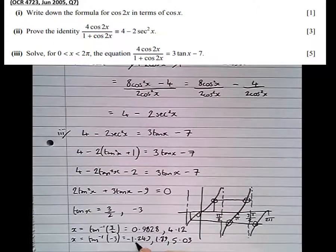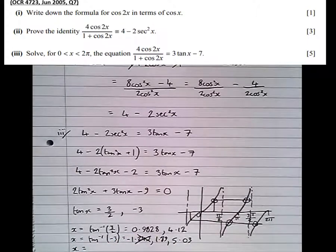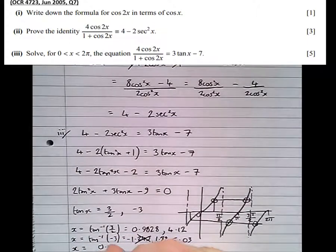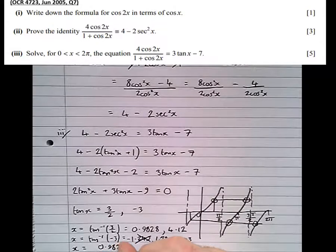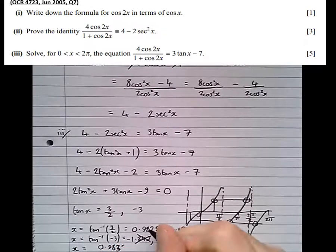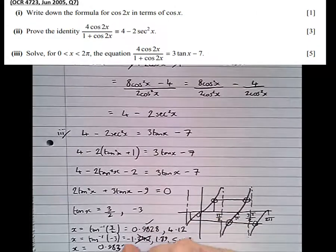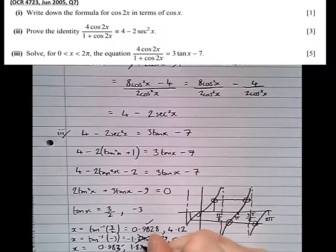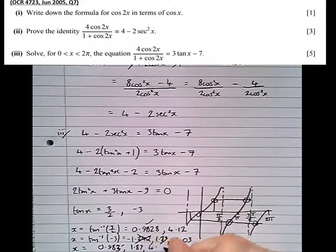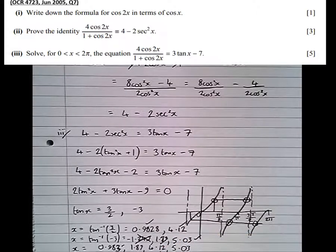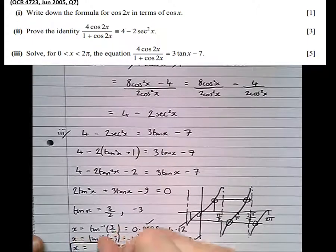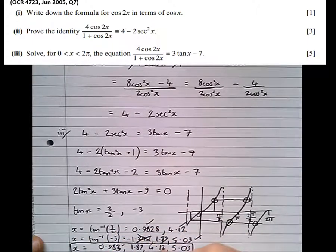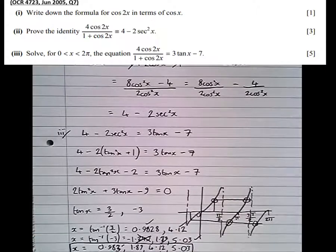So let's conclude now with all the valid answers. We decided that one wasn't valid. So x equals 0.9828, which is 0.983 to 3 significant figures. Done that one. Next one in order is 1.89. Got that one. 4.12. Got that one. And 5.03. Got that one. Making our answers prominent. There we go. There's all of our answers.